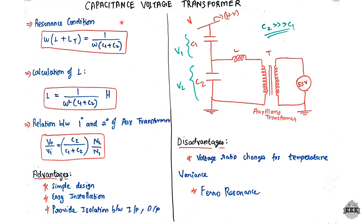The resonance condition formula is: omega times (L plus Lt) equals 1 divided by [omega times (C1 plus C2)], where omega is angular frequency, L is the inductor, and Lt is the transformer inductance. From this, the inductor value L equals 1 divided by [omega squared times (C1 plus C2)]. The output-to-input relation is: V0 divided by Vn equals C2 divided by (C1 plus C2), multiplied by the turns ratio N2 over N1.